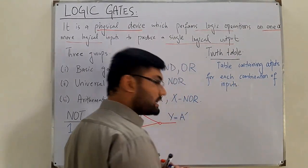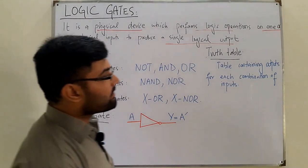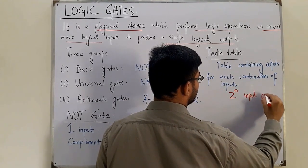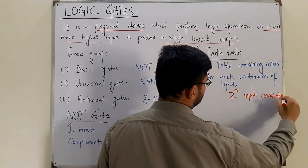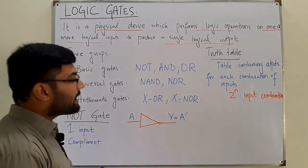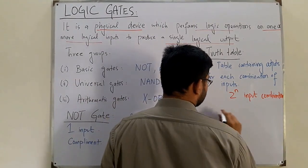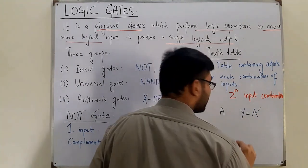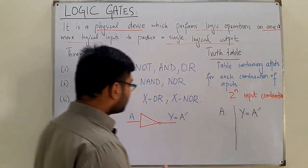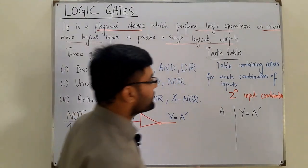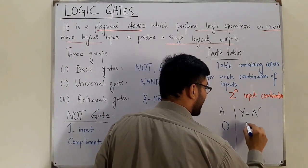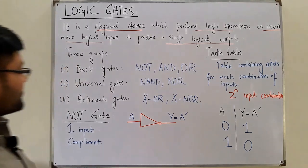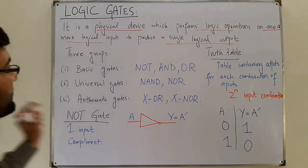If we have n total number of inputs, we can have 2 to the power n input combinations. For the NOT gate truth table: input A and output Y = complement of A. Since it's a single-input gate, if input A is zero, the output is one; and if input A is one, the output is zero. That's the NOT gate — it complements the input.